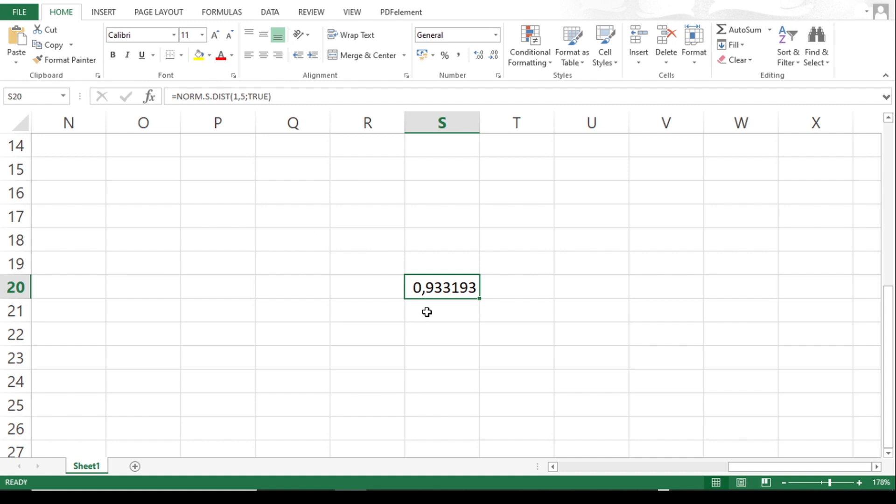And remember, we want to find the probability that z is greater than 1.5. So we have to subtract that from 1. And we get 0.0668, which is exactly the same that we got when we did the calculation by hand.